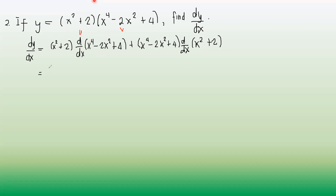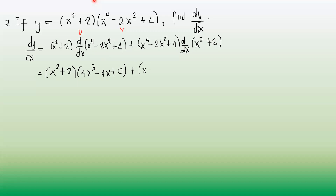Applying the formulas: we have the quantity x squared plus 2, times the differentiated second function. Differentiating x raised to 4: bring down the 4, giving 4x cubed. Differentiating minus 2x squared: bring down the 2, times 2 gives 4, so minus 4x. Derivative of constant 4 is 0. Plus the quantity x raised to 4 minus 2x squared plus 4, times the differentiated first function: differentiate x squared to get 2x, plus derivative of 2 which is 0.